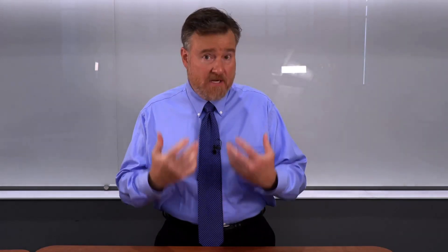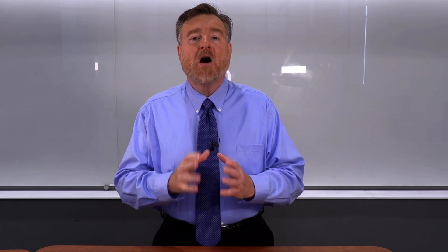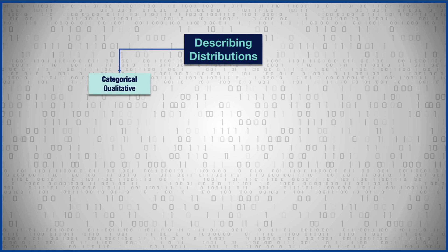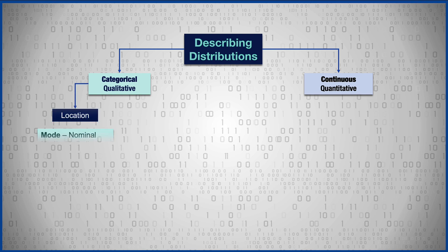To teach you how to choose a measure of central tendency and variability, let me introduce the things we will be considering in this video. When describing a distribution, you first consider whether you are using categorical — also known as qualitative — data, or continuous — also known as quantitative — data. Categorical data are nominal and ordinal.